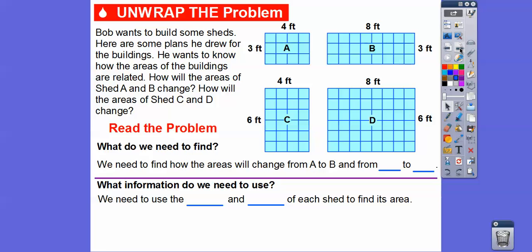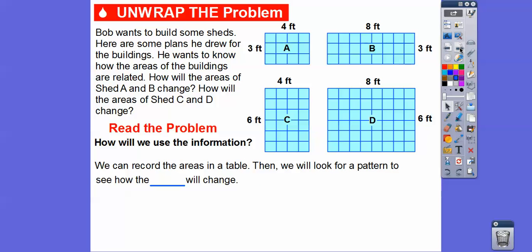So what do we need to find? We need to find how the areas will change from Shed A to B, and also from Shed C to Shed D. What information are we going to use? We're going to use the length and width of each shed to find its area. We do length times width. We can record the areas in a table, then look for a pattern to see how the area will change.